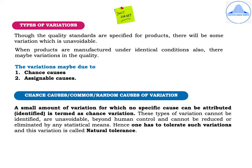There are two types of variations. Though quality standards are specified for various products, some variation is unavoidable. Even when products are manufactured under identical conditions, there may be variations in quality. These variations may be due to chance causes or assignable causes. Chance causes, also called common or random causes of variation, refer to a small amount of variation for which no specific cause can be attributed. These types of variations cannot be identified, are unavoidable, beyond human control, and cannot be reduced or eliminated by any statistical means.